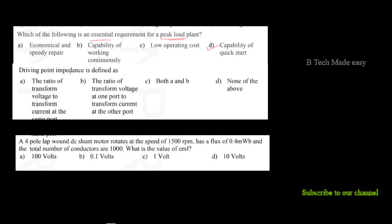Driving point impedance is defined as the ratio of transform voltage to transform current at the same port. The ratio of transform voltage to transform current is the driving point impedance.